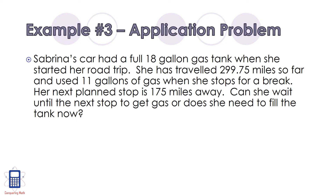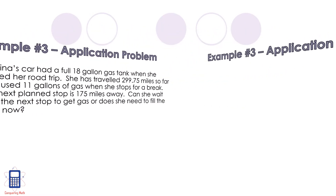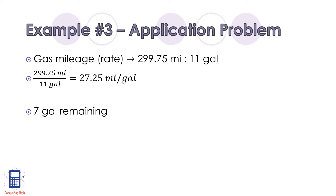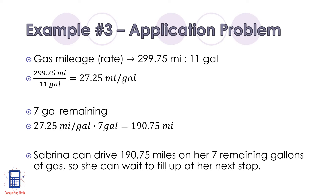Let's apply unit rates to a real world problem. Sabrina's car had a full 18-gallon gas tank when she started her road trip. She has traveled 299.75 miles so far and used 11 gallons of gas when she stops for a break. Her next planned stop is 175 miles away. Can she wait until the next stop to get gas, or does she need to fill the tank now? We know that Sabrina has driven 299.75 miles on 11 gallons of gas, giving us a unit rate of 27.25 miles per gallon. She has 7 gallons remaining, so multiplying these two numbers together we find she has 190.75 miles left. Since 190.75 miles is greater than 175 miles, she can wait to fill up at her next stop.